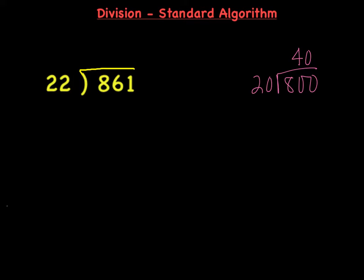If I would have gone with 22 and 880, I would still have ended up with an estimate of a quotient of 40. So either way, my answer is going to be around there. I'm going to think of this as having 861 dollars split among 22 people.